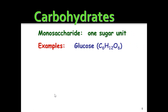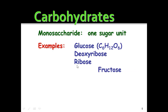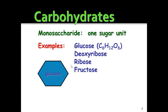The monosaccharide is one sugar unit. An example is glucose — the molecular formula is C6H12O6. Deoxyribose is another one; that word might sound familiar from DNA — deoxyribonucleic acid. And ribose, like in RNA, is just another type of sugar. Fructose is the sugar found in fruit. Glucose, the monosaccharide, is just one building block.